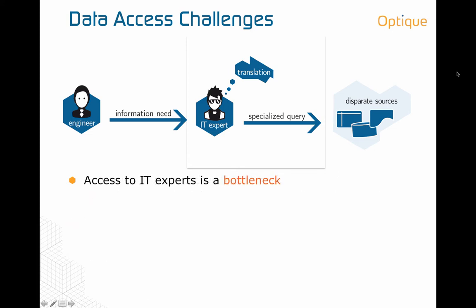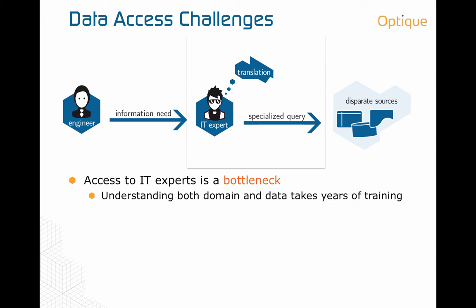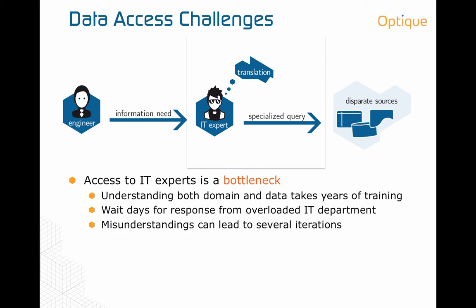In these industries, access to IT experts turns out to be a major bottleneck. Understanding both the domain and the data sufficiently to do these translations takes years of training. The IT department is typically overloaded, and engineers will have to wait days or even weeks to get the data they need. In addition, misunderstandings between the engineers and IT experts can lead to the need for several iterations in the data access process.